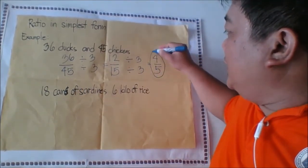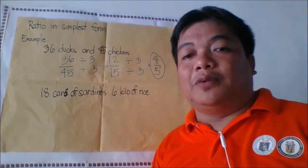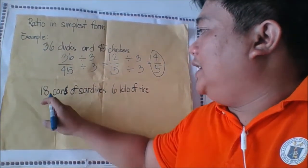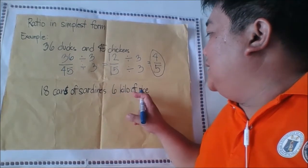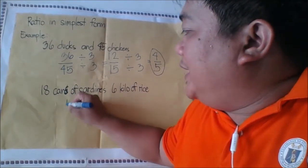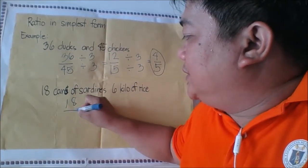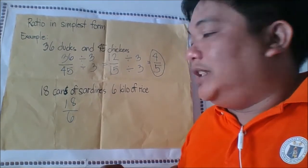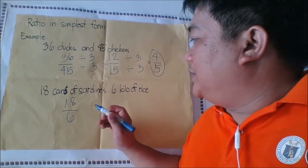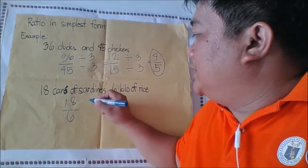Next, 18 cans and 6 kilos of rice. So you write 18 to 6. What is the common factor between the two of them?